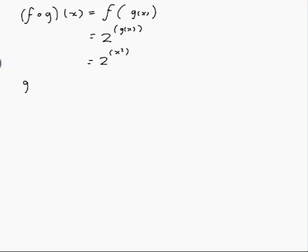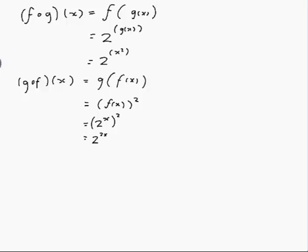g of f of x: now g is x squared, so something squared, and the something we put in there is f of x instead of x. But f of x is 2 to the power of x, so we have 2 to the power of x, all squared. I'll put brackets in around that.